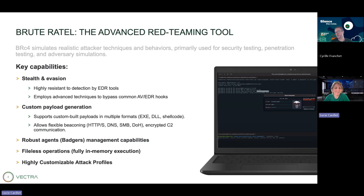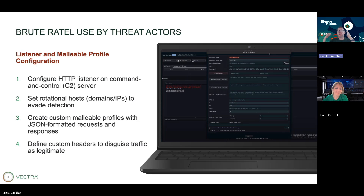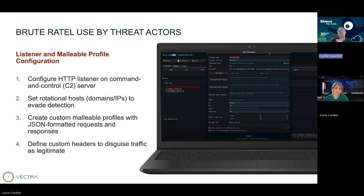Sounds like a very powerful tool. Can you tell us how threat actors are using it to remain stealthy after they gain initial access? They are using malleable profiles to simulate a legitimate communication between the badgers and the C2 server. You can configure your listener on your C2 server to use, for example, a custom malleable profile using JSON formatted requests and responses if you want to emulate an API. You can also add some custom headers to simulate legitimate traffic. You also have the possibility to use many host domains or IPs to evade detection, because it will be more complex for the defender to follow and discover the C2 infrastructure if you connect to different domains every time you contact your C2 server.